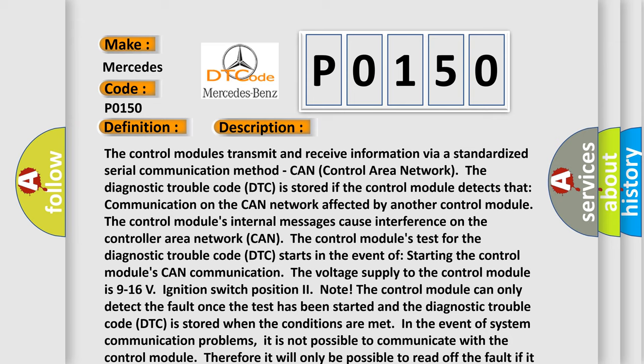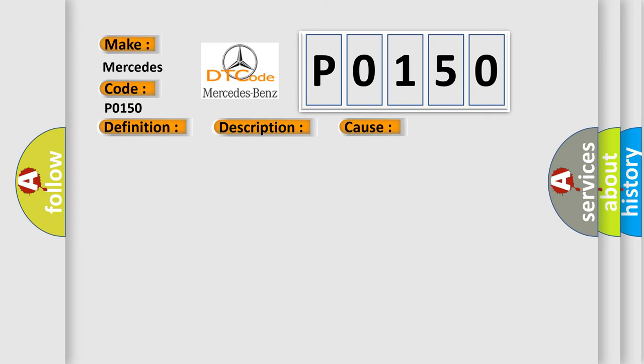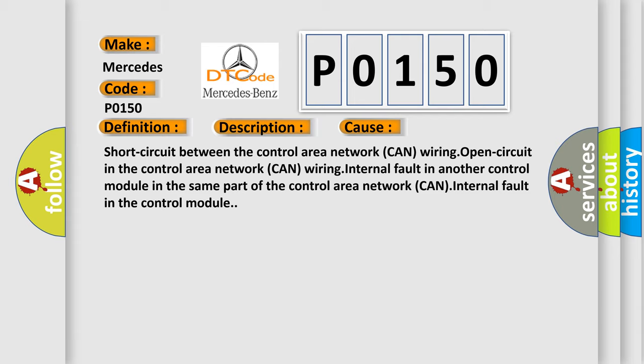This diagnostic error occurs most often in these cases: Short circuit between the control area network (CAN) wiring, open circuit in the control area network (CAN) wiring, internal fault in another control module in the same part of the control area network (CAN), or internal fault in the control module.